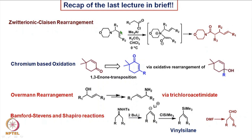Of course, we can take a differently oriented double bond — that means cis — and then we can get different stereochemistry in the final product. Likewise, we also looked at the chromium-based oxidation, particularly in the enone transposition of this type to this type, by introducing an R group and carrying out the oxidative rearrangement of this kind of tertiary allylic alcohol. This rearrangement was a kind of reminiscence of the Claisen rearrangement.